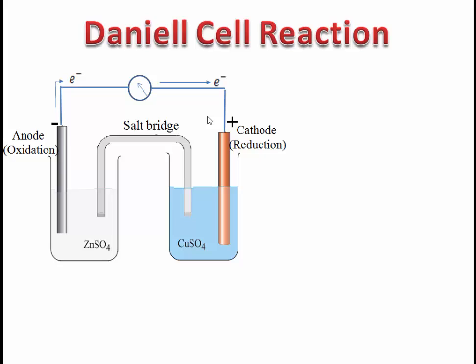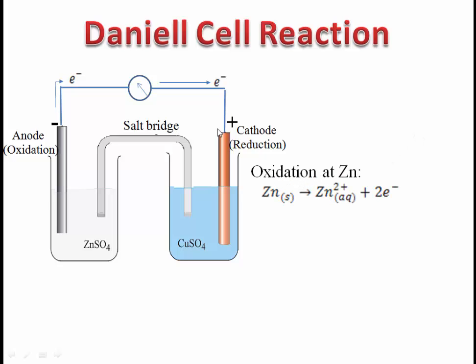Now we see the reactions taking place in Daniel's cell. As we discussed, the zinc rod ionizes. The reaction taking place on the zinc electrode is: solid Zn passes into the solution in the form of Zn²⁺ ions and loses two electrons. Therefore, this reaction is called an oxidation reaction. That means on the anode, oxidation takes place.